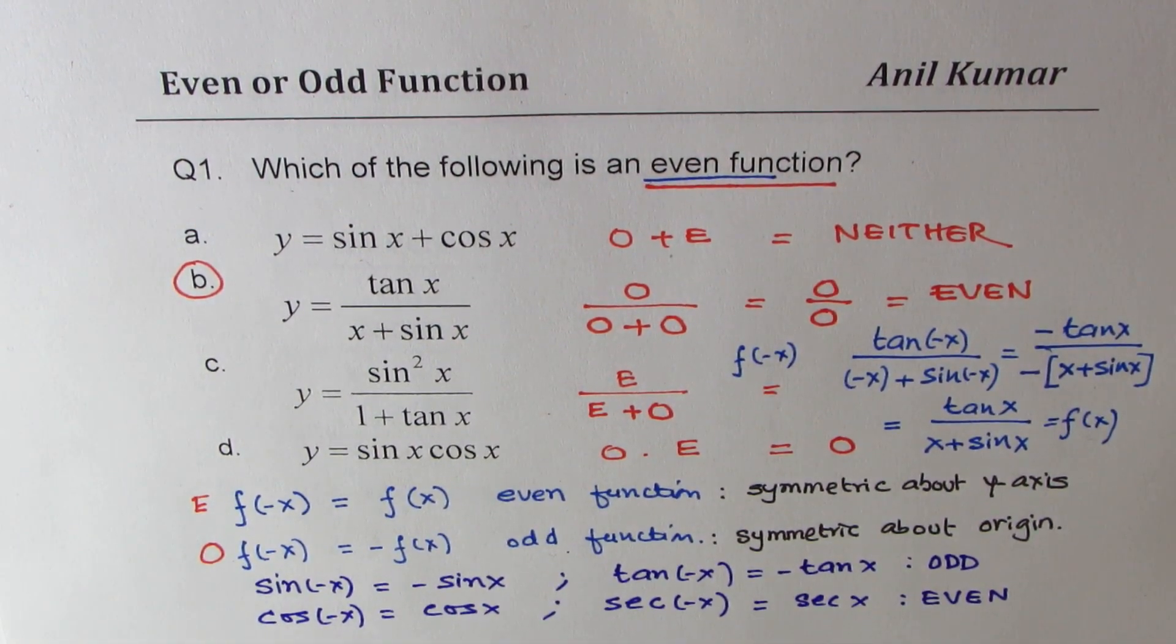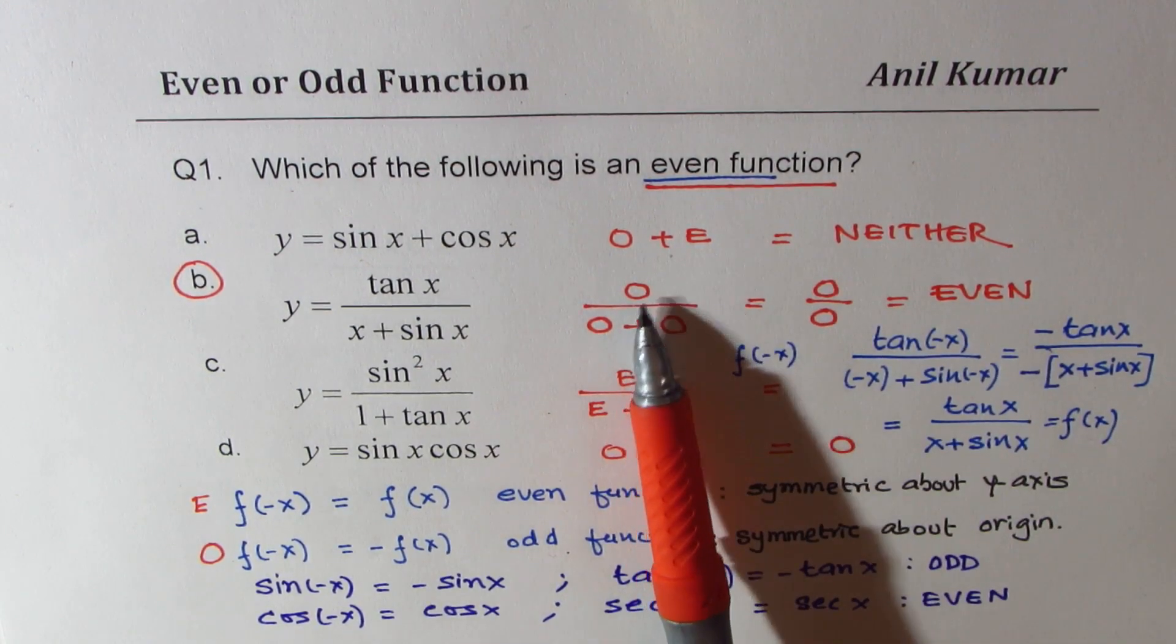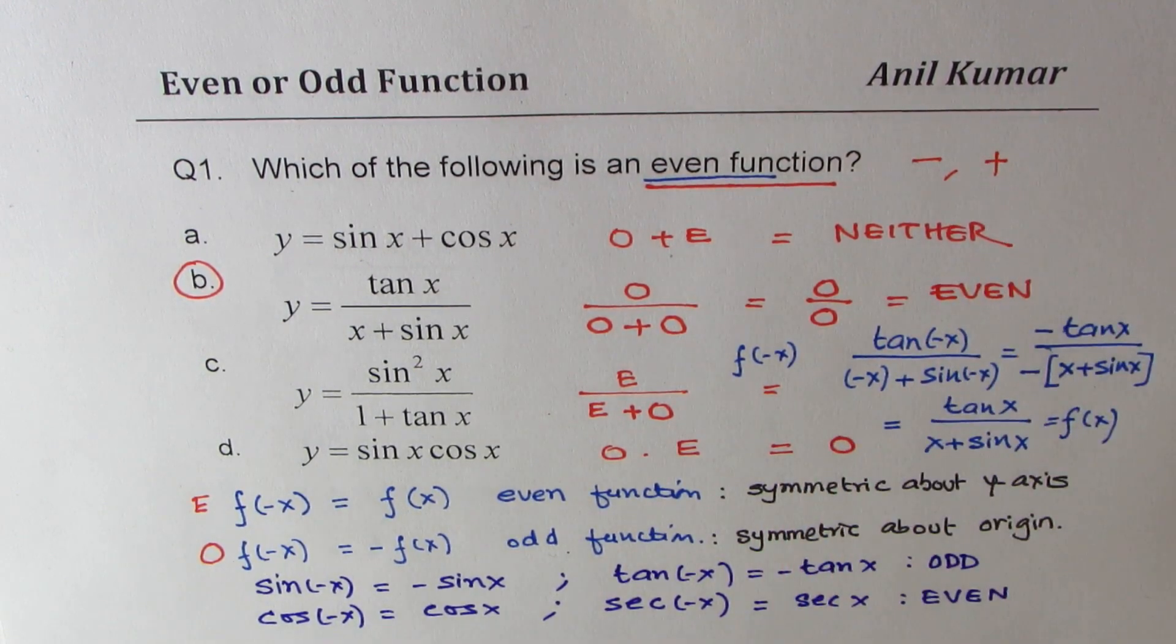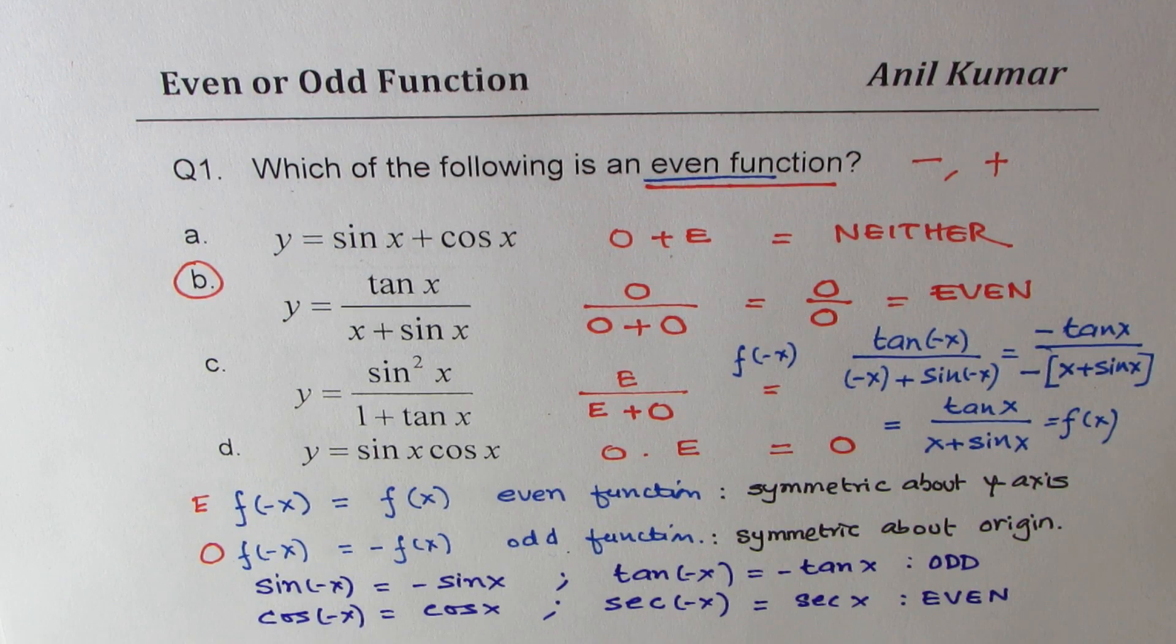Is that clear? So there are many ways to do it, but probably I like this strategy of using negative and positive signs for odd and even to figure out when there are multiple functions with us. So I hope this concept is absolutely clear.